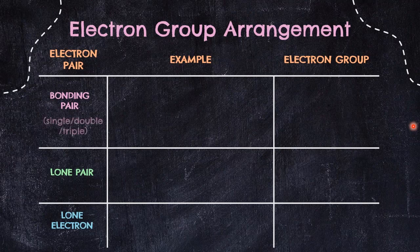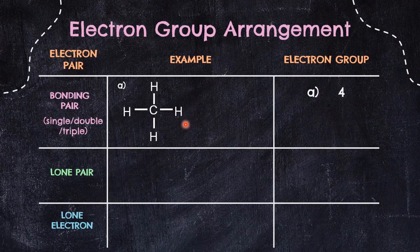For bonding pairs, we can have either single, double, or triple bonds. For methane, which has 4 single bonds, each single bond contributes only one electron group, so methane has 4 electron groups altogether. For carbon dioxide, we have 2 double bonds. One double bond contributes to one electron group, so 2 double bonds means 2 electron groups.